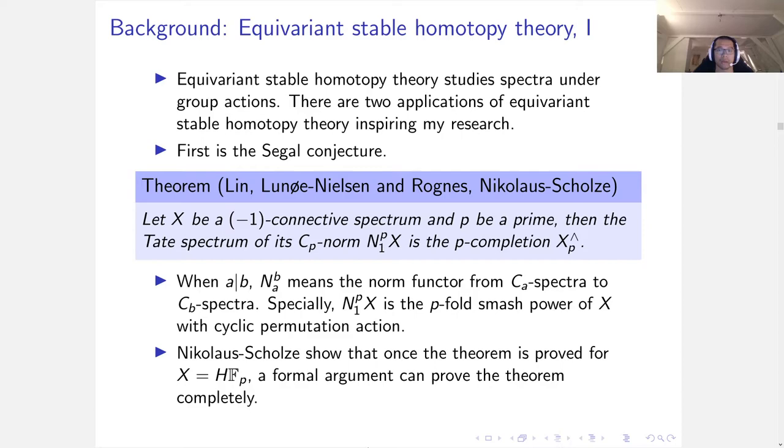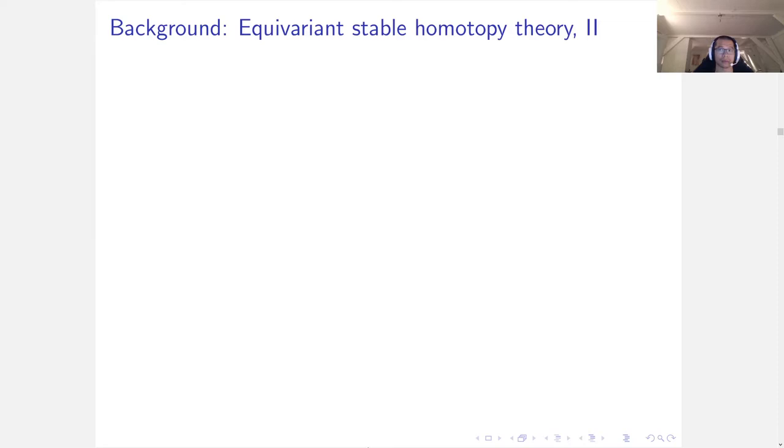Nicholas Kuhn showed that once the theorem is proved for X equals HFp, the Eilenberg-MacLane spectrum of Fp, then a formal argument can be used to prove the theorem completely.